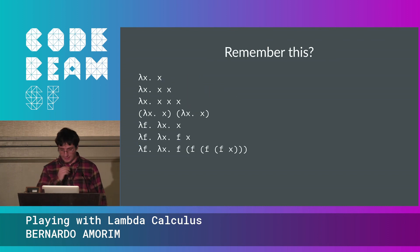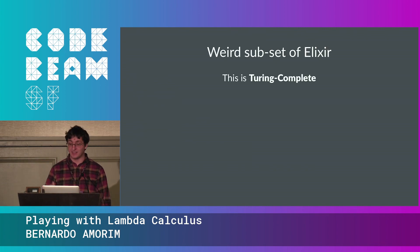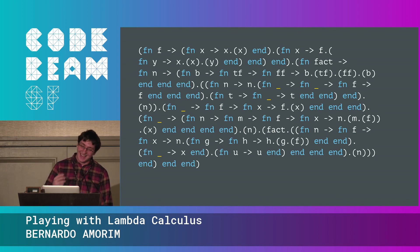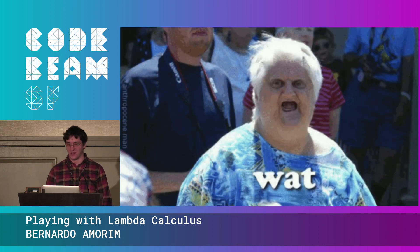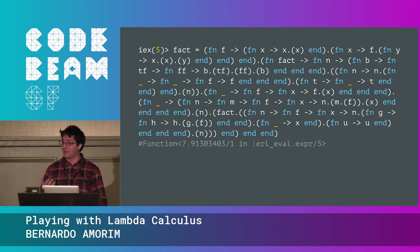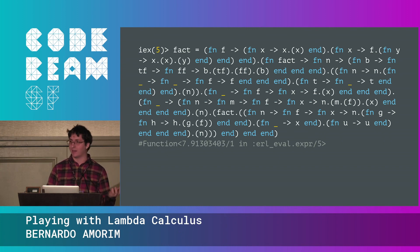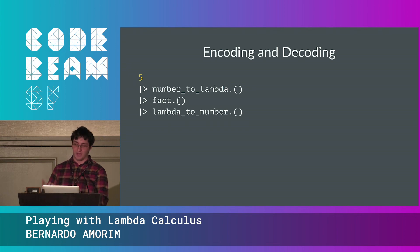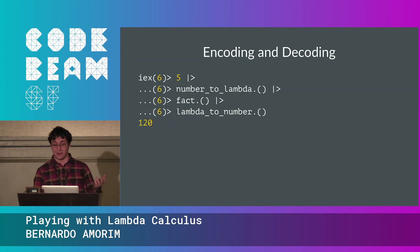Programming Elixir that way is actually Turing complete — all computable functions can be represented. To demonstrate, here is the factorial function implemented this way. It looks wild, but you can put it in your Elixir shell and calculate a factorial. There's a catch: it only works with functions, so you can't directly pass an Elixir number. You need helper functions to convert an Elixir number to a lambda-encoded version, call factorial, then convert back. Indeed, factorial of 5 is 120.